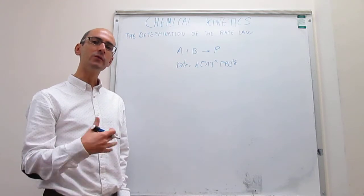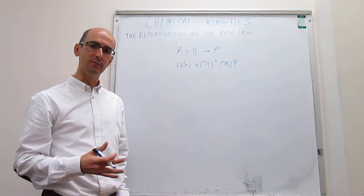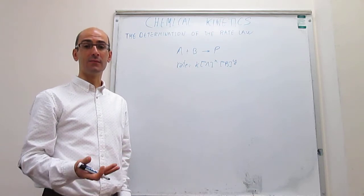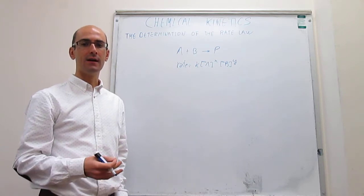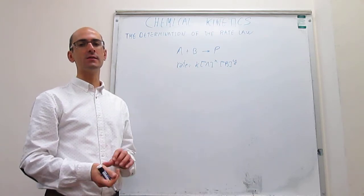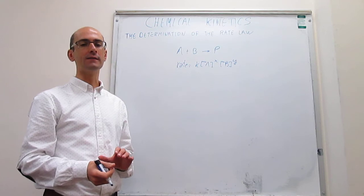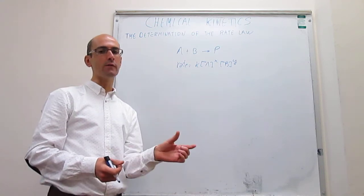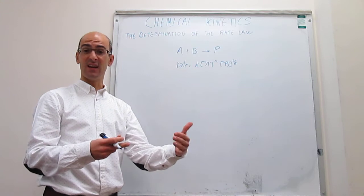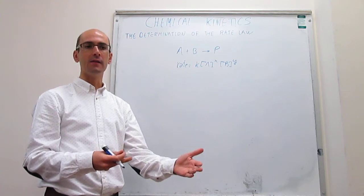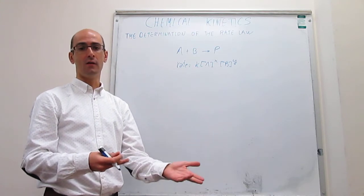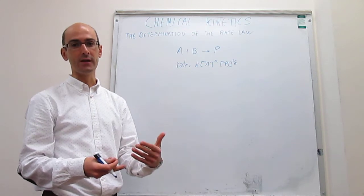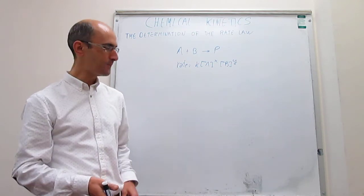We're going to introduce in this video a very simple method called the isolation method. As the name indicates, it consists of trying to isolate the dependence of the rate on the concentration of just one of the reagents in isolation and separation, then determine what the reaction order is with respect to the other reagent, and then put it all together.